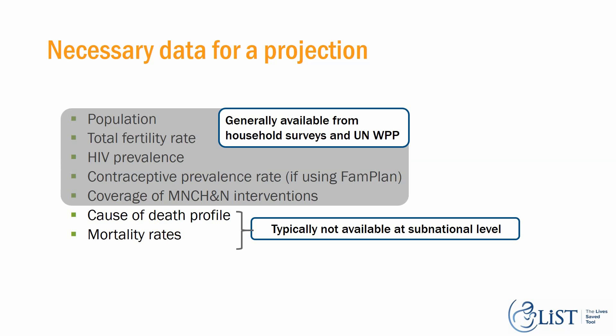When modeling at the national level, typically population, HIV prevalence, total fertility rate, CPR, and coverage are available from household surveys and UNWPP. The cause of death profile and mortality rates are also available at the national level, but they're typically unavailable at the subnational level.